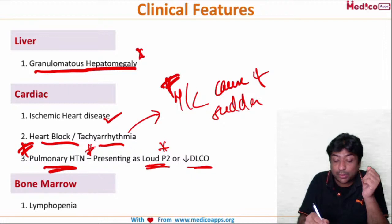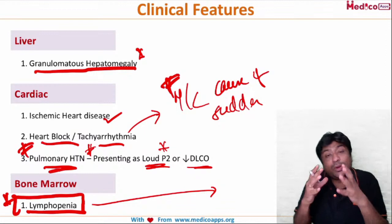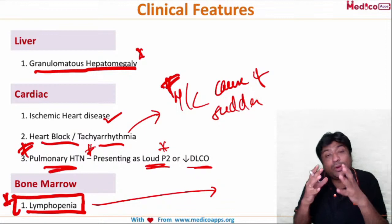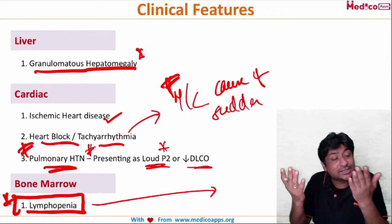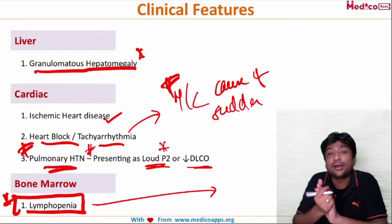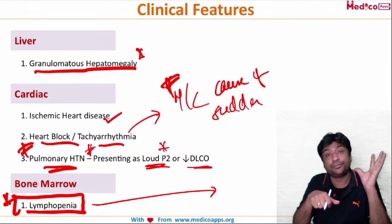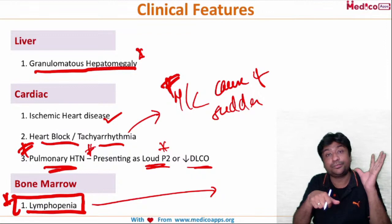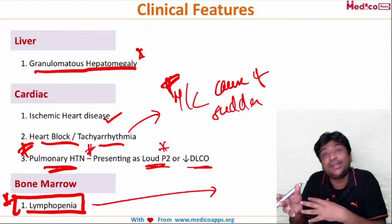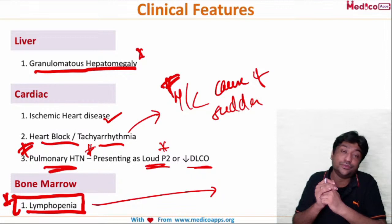Bone marrow: significant lymphopenia on peripheral smear. Since steroids are the mainstay of treatment, giving steroids will further reduce lymphocytes, increasing the risk of angio-invasive mycetoma. Therefore, steroids should be used at the lowest possible dose, with steroid-sparing agents added if needed. We never aggressively increase steroid dose.